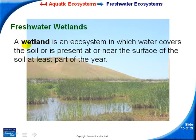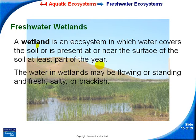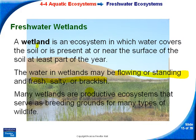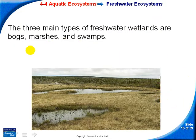Freshwater wetlands are ecosystems in which water covers the soil, or is present at or near the soil surface at least part of the year. They can be flowing or standing, and the water can be fresh, salty, or brackish. Wetlands serve as breeding grounds for many types of wildlife. The three main types are bogs, marshes, and swamps.